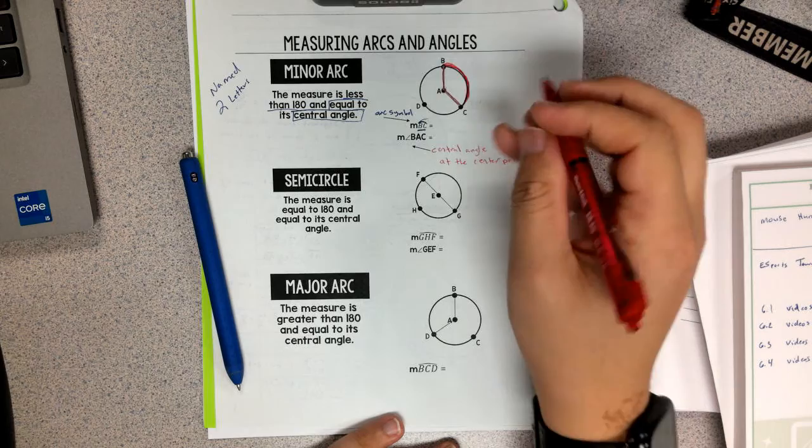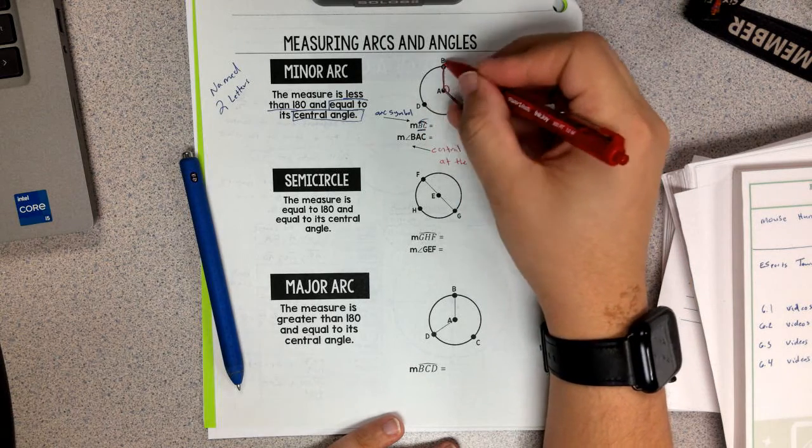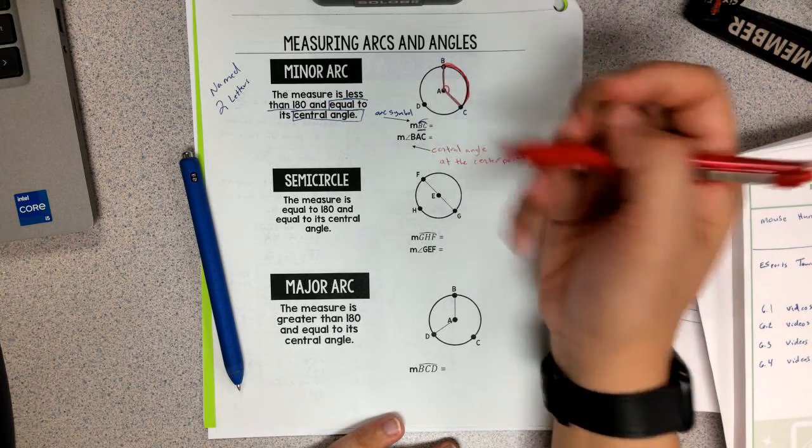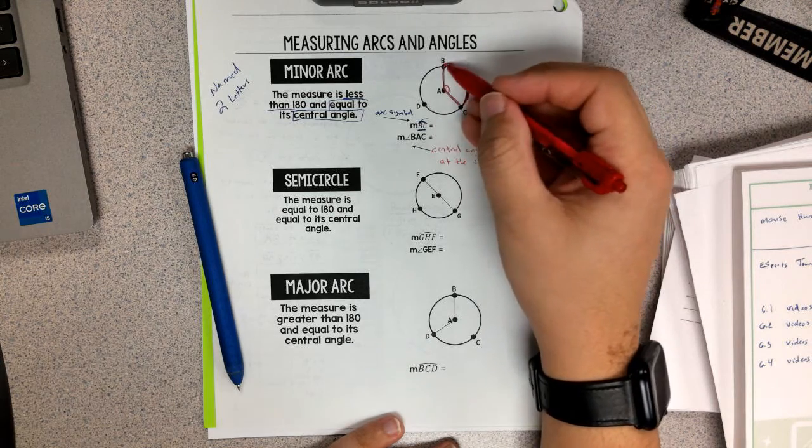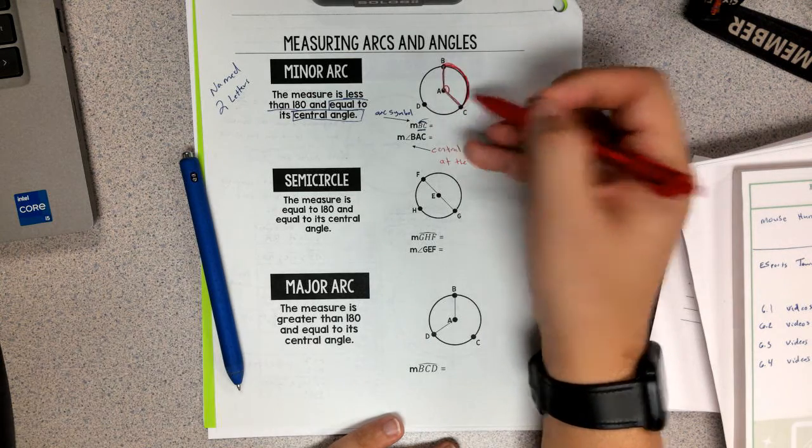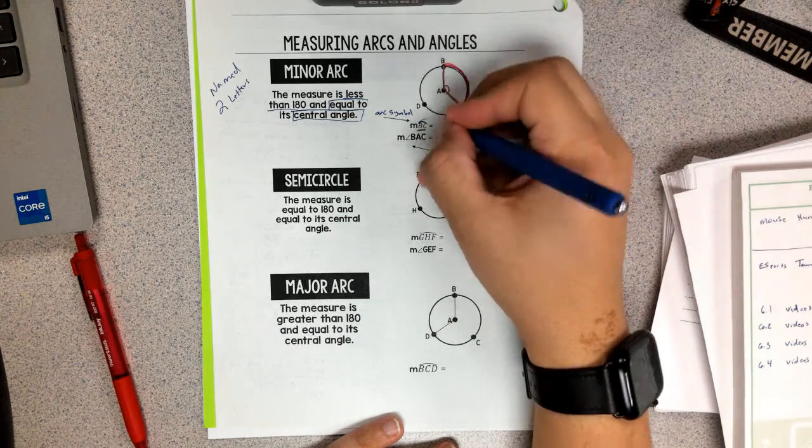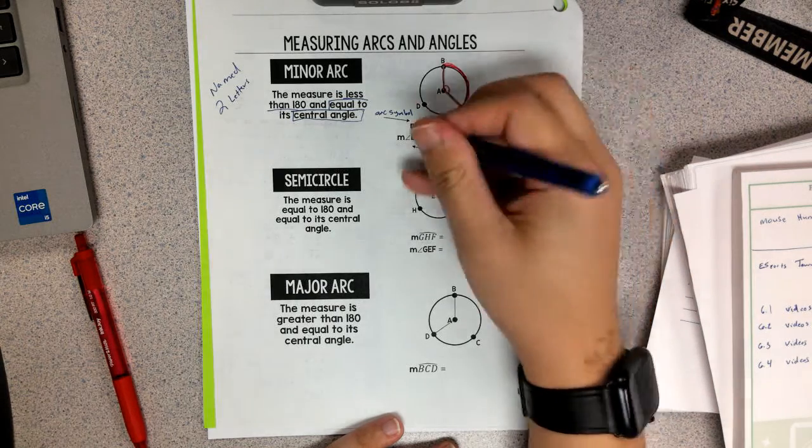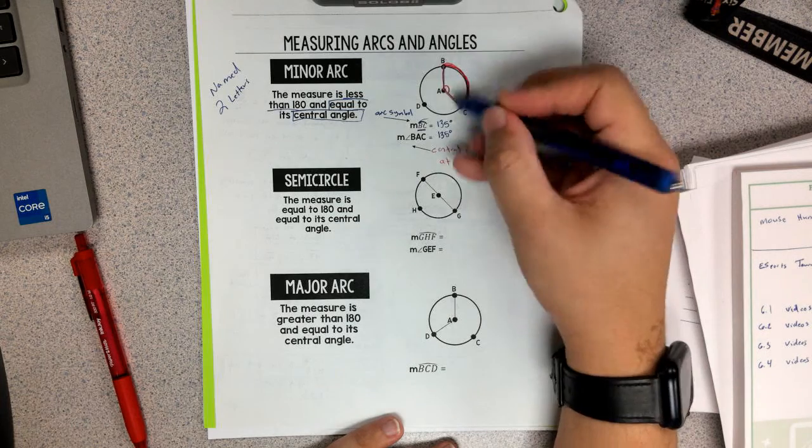So this is our angle that we're looking at. And notice I drew an arc there, which is similar to this arc, because when we've talked about angles this year, we've always used arcs to identify them. And so now the arc is just not near the point, but rather up higher. So if I tell you that this angle, or this arc, is 135 degrees, that means that the central angle is also 135 degrees, because they are the same.